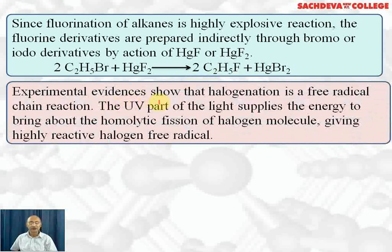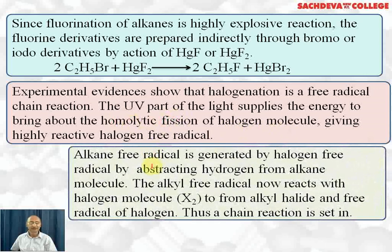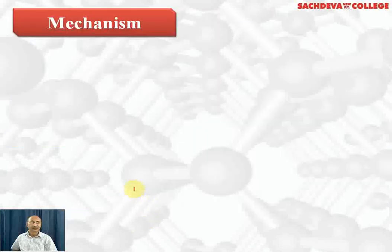Experimental evidence shows that halogenation is a free radical chain reaction. Ultraviolet light supplies energy to bring about the homolytic fission of the halogen molecule, giving highly reactive halogen free radicals. An alkane free radical is generated when the halogen free radical abstracts a hydrogen from the alkane molecule, leading to the formation of an alkyl free radical, which then reacts with a halogen molecule X₂ to form the alkyl halide, regenerating a halogen free radical and setting up a chain reaction.